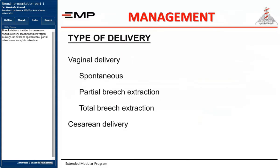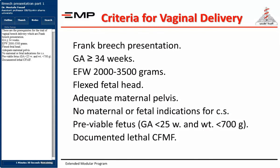The prerequisites for a trial of vaginal breech delivery are: frank breech presentation, gestational age greater than or equal to 34 weeks, estimated fetal weight between 2000 and 3500 grams, flexed fetal head, adequate maternal pelvis, no maternal or fetal indications for cesarean section, or a previable fetus at GA 25 weeks with weight around 700 grams.